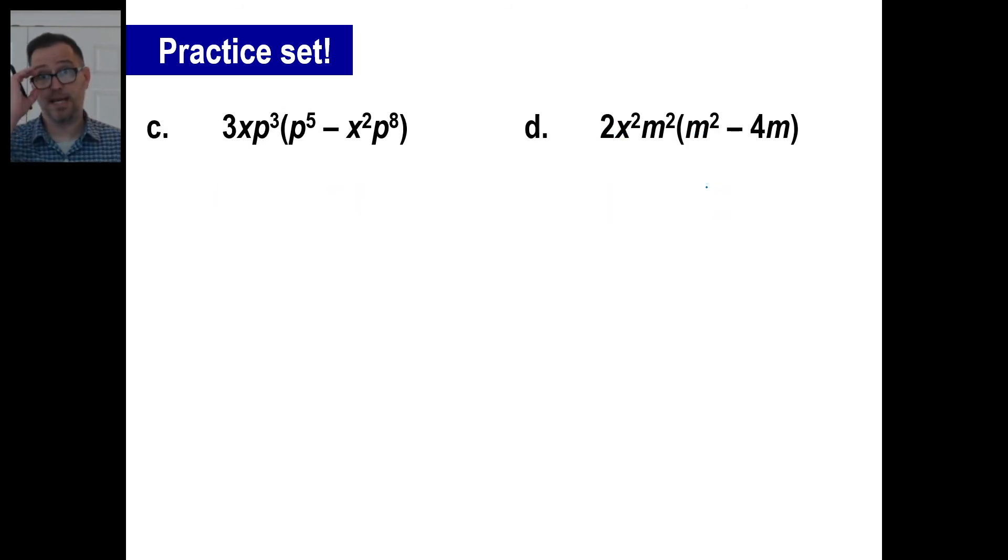Go ahead and pause it and try C and D. All right. We'll move to an exciting new color. Black. And we'll take this one first. Three times a one is three. X has nothing to go with. P to the third times P to the fifth is P to the eighth. Done. A positive times a negative is a negative. That's a one. Three times a one is a three. X times X squared is X to the third. P to the third times P to the eighth is P to the eleventh. Boom. There you go.